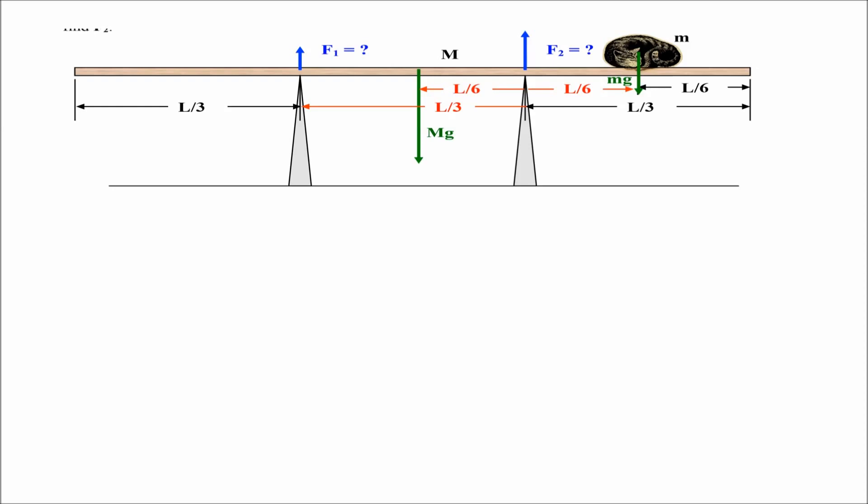Now apply the force equation. Force net up is equal to zero. So the equation is. F1 plus F2 minus the mass of the plank times gravity minus the mass of the cat times gravity is equal to zero.